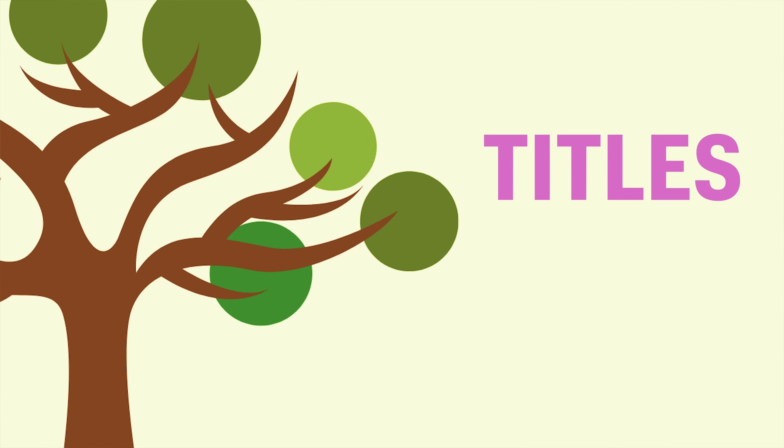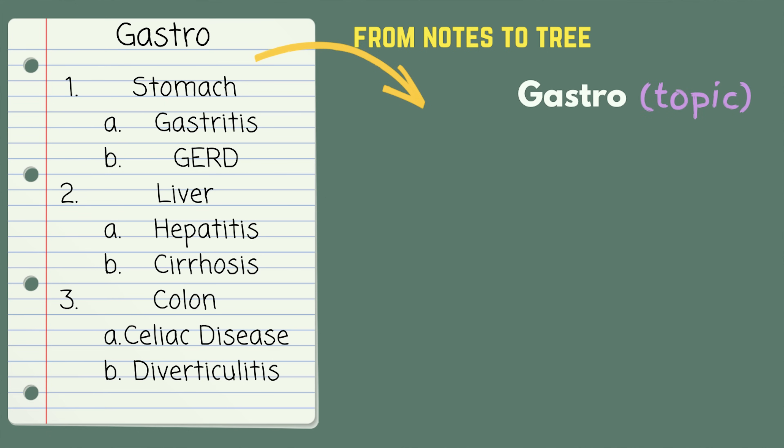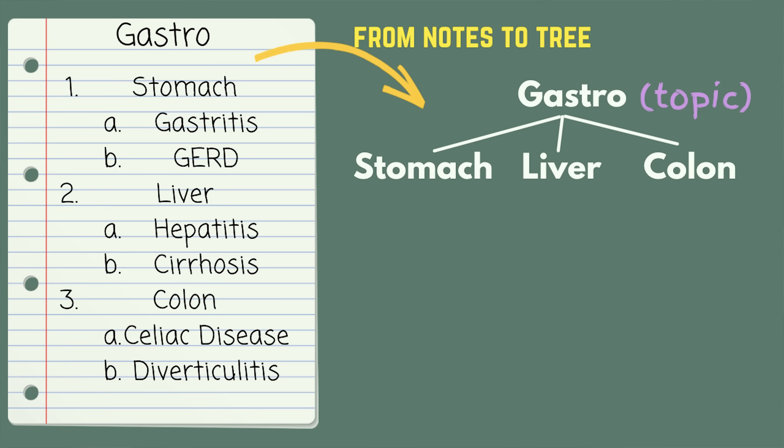Next, you add the titles, which will be the branches of the tree. Titles refer to the different sections within the topic. If you look at your textbook or lecture slides, titles are what divide the individual sections of the chapter. So if I'm making a tree on the topic of gastro, my branches would be the individual organs: the esophagus, stomach, pancreas, gallbladder, liver, intestines, and so on.